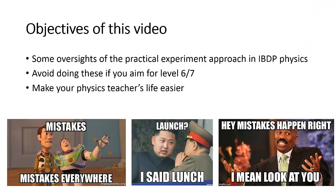Before we start, I will assume you have some basic background knowledge about the physics IA expectations — if not, you should look at the criteria again. Watching this video doesn't mean you can get level six or seven directly; it's more about some basic things you should look out for. In the coming 12 common mistakes, I will always show you the mistake first — what the student wrote — and if you like, you can try to pause the video, think about what is wrong, and then I will show you the actual explanation.